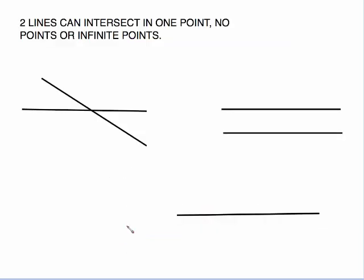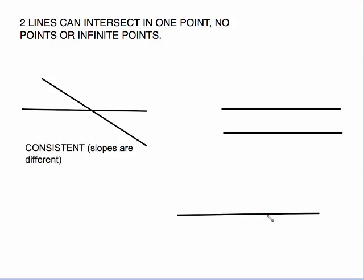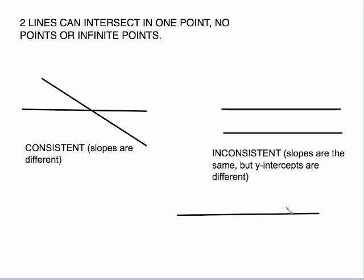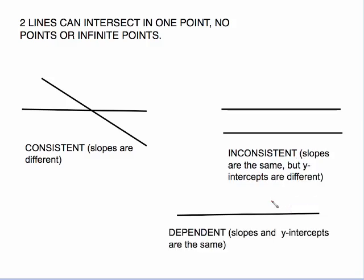Now what can actually happen with two lines is this. Two lines can intersect in one point, or they can intersect in no point because they're parallel. Or it can be this situation right here which looks like it's just one line, but if I drag that apart you see that it was actually two lines piled up on top of each other, meaning it was the same line. If the two lines intersect in one point, that's called a consistent system and the slopes of the lines are different. If it's the parallel situation, the slopes of the lines are the same but the y-intercepts are different, and that's called inconsistent. The third situation is called dependent, and the equations will show that the slopes and the y-intercepts are the same.